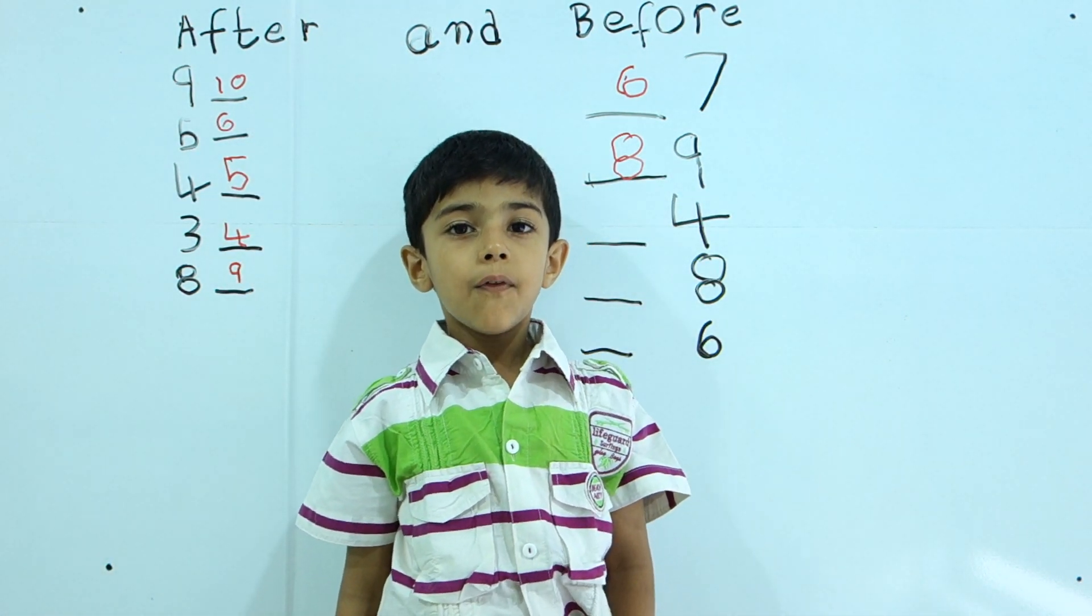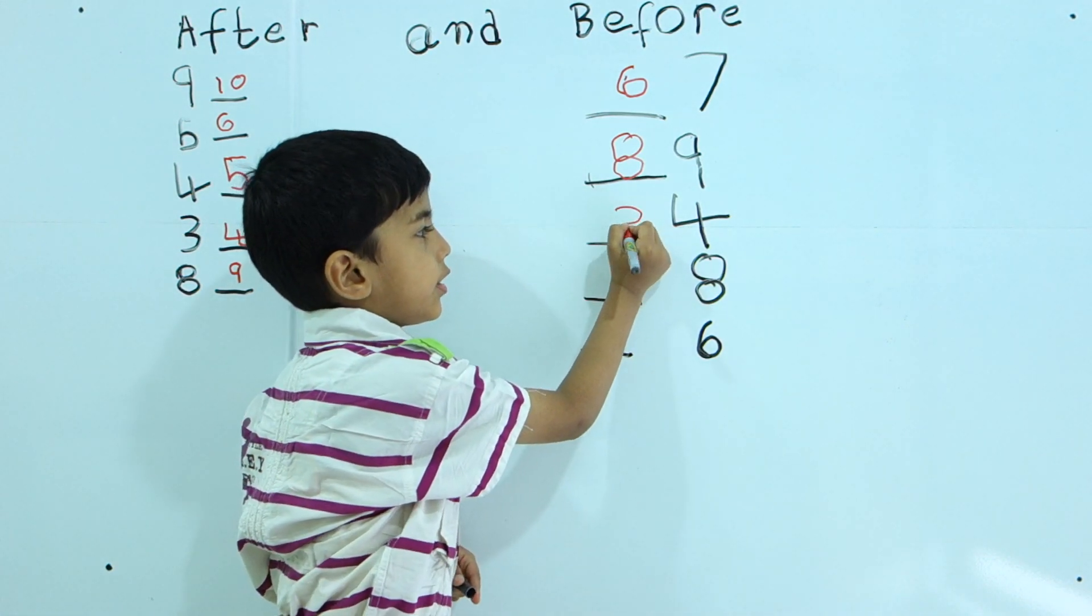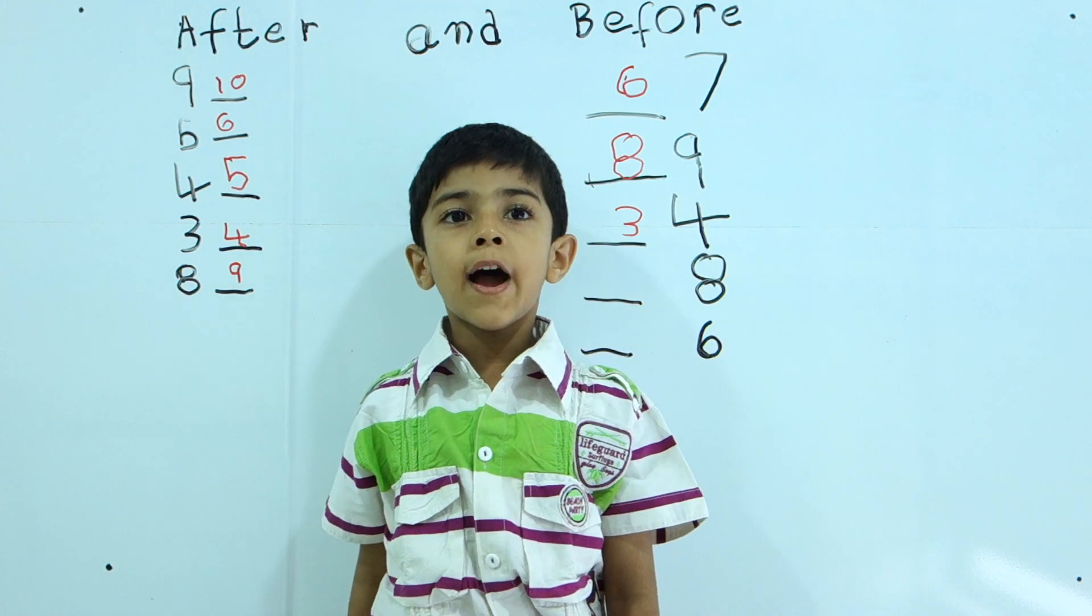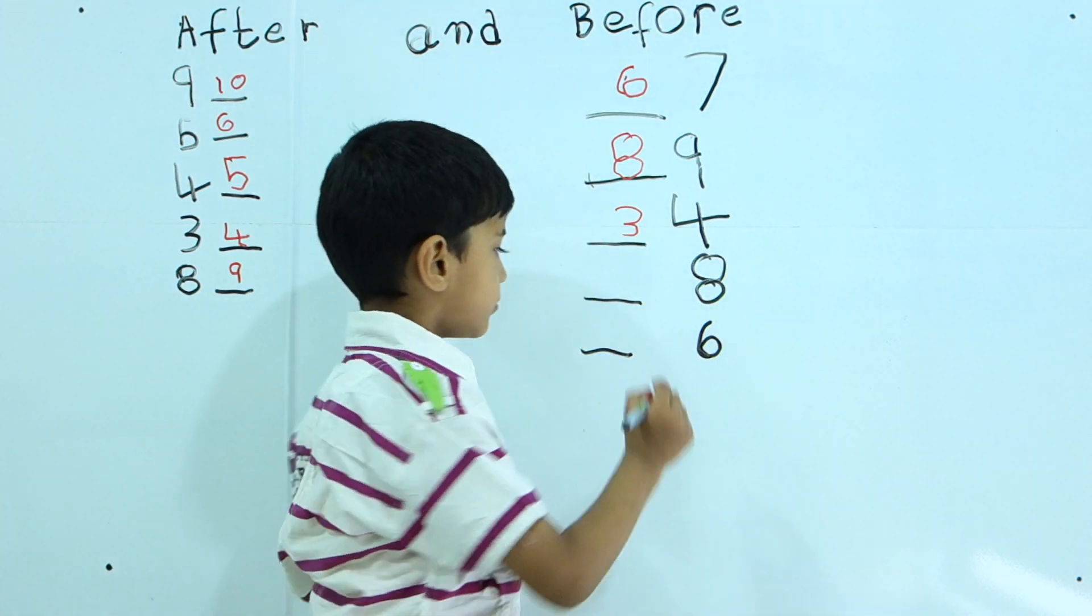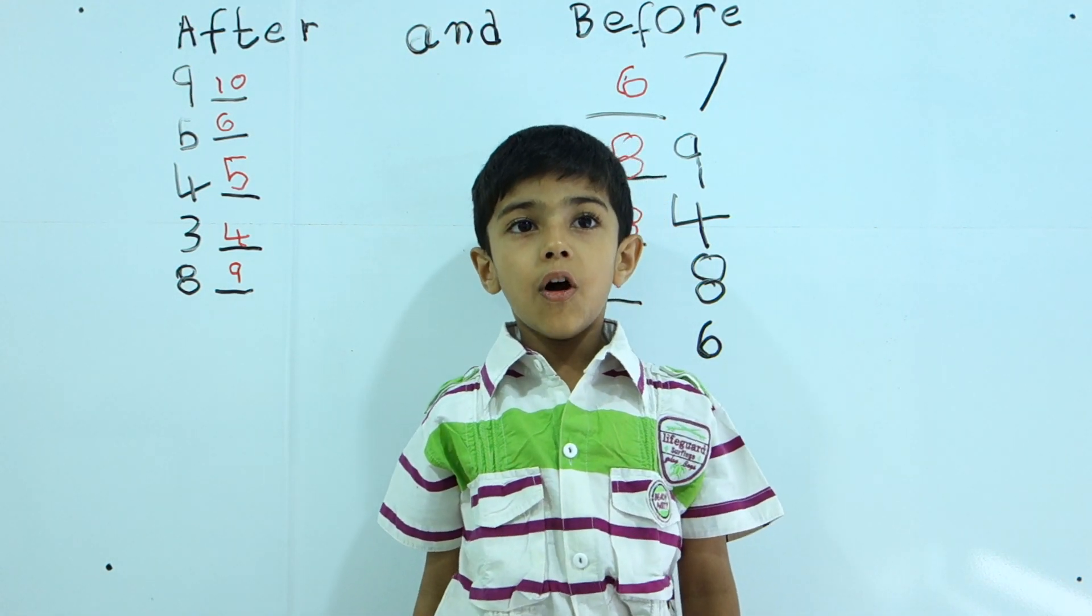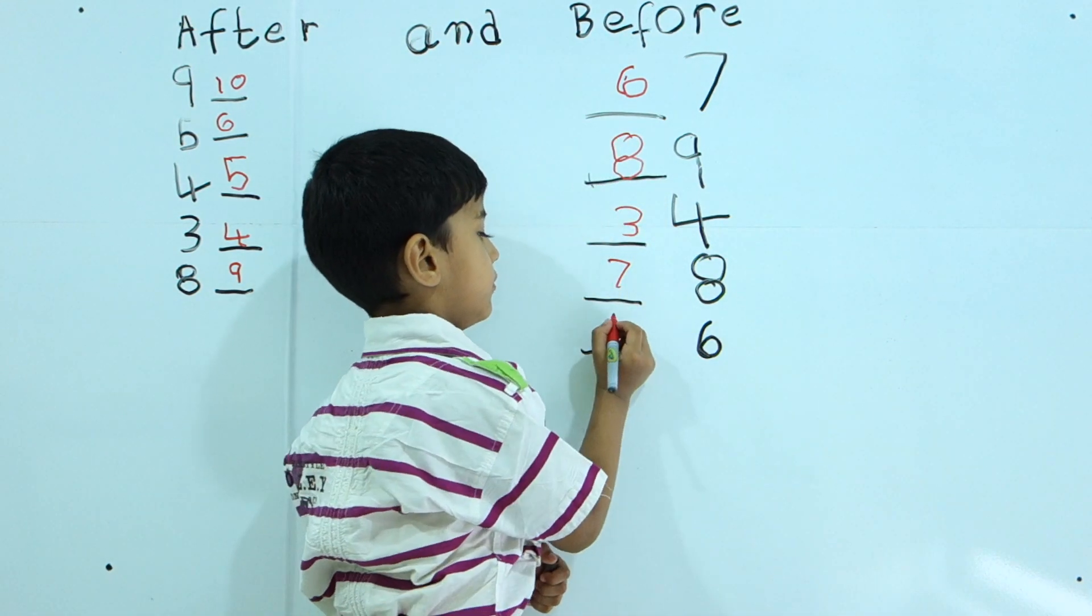One, two, four, five, six, seven, eight. One, two, four, five, six, five.